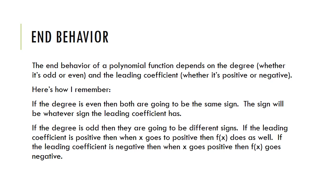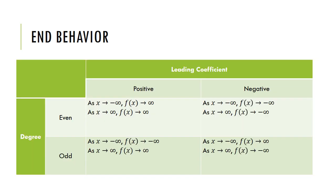If the degree is odd, then f(x) goes to negative infinity for one end and positive infinity for the other, based on the leading coefficient. If the leading coefficient is positive, then as x goes positive, f(x) goes positive. If the leading coefficient is negative, then as x goes positive, f(x) goes negative. Here's a table summarizing this: you look at your leading coefficient and your degree — whether even or odd and whether positive or negative — to get a statement for end behavior.